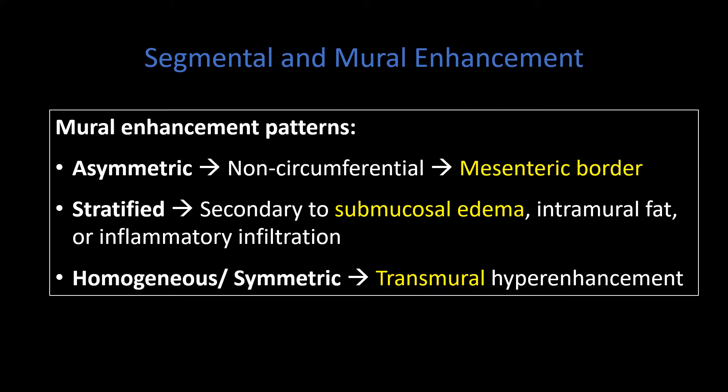This asymmetric enhancement may be early in the process. As that process progresses, you may see a stratified form of enhancement, which manifests in a targetoid appearance — some people call it mural stratification. As the bowel gets more inflamed, you develop submucosal edema, which causes the submucosa to be thickened and low in attenuation. It enhances less than the inner wall or the muscularis propria, creating inner wall hyper-enhancement, then submucosal edema, then the muscularis propria — producing that targetoid appearance. In more chronic manifestations, the submucosal region can have fat deposition, which can be a manifestation of chronic or prior inflammation.